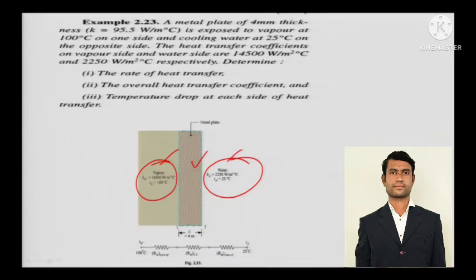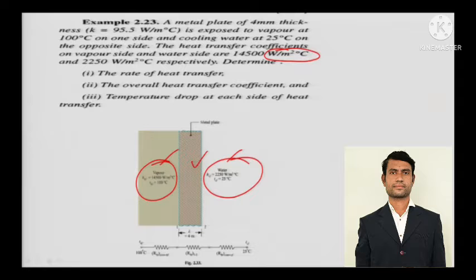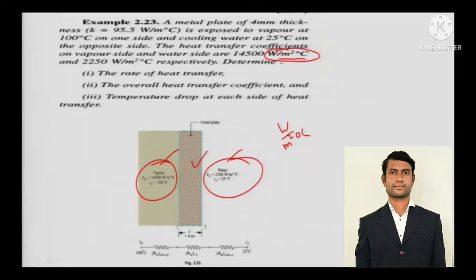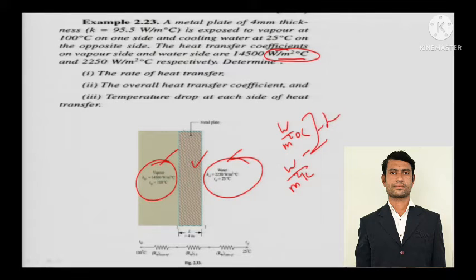When you see the unit watts per meter squared per degree Celsius (or watts per meter squared per Kelvin), that refers to H — the heat transfer coefficient from Newton's law of convection (Newton's law of cooling). So this is vapor on one side, water on the other, and the metallic plate sandwiched between them.